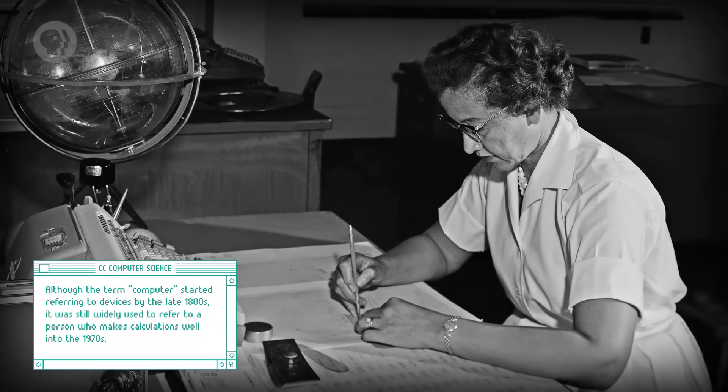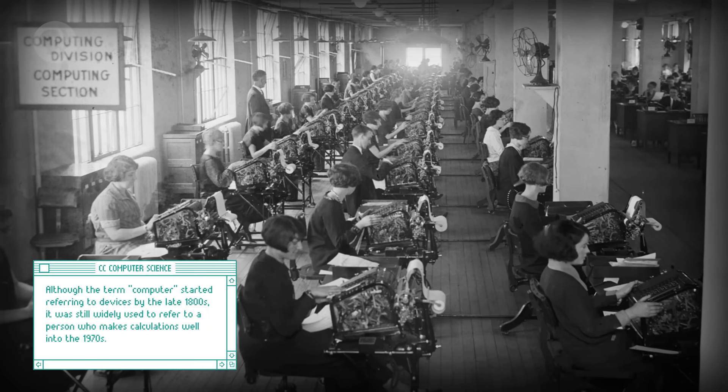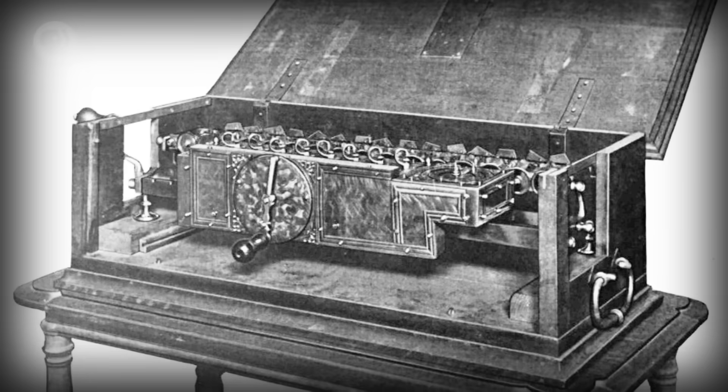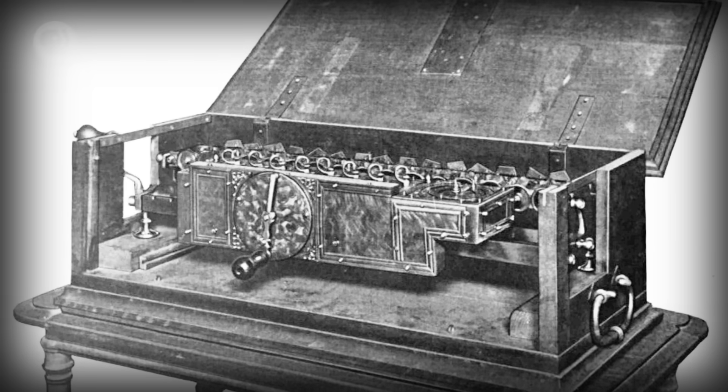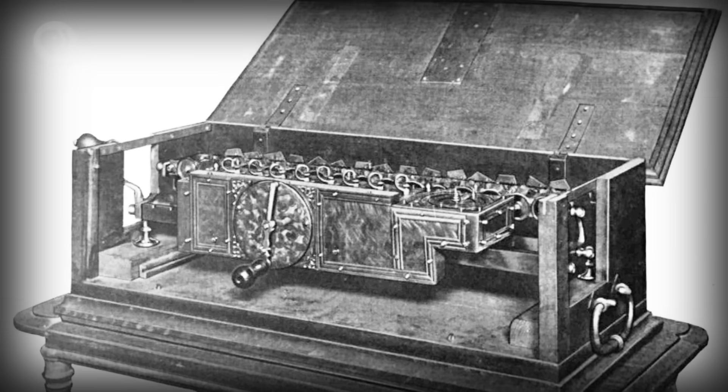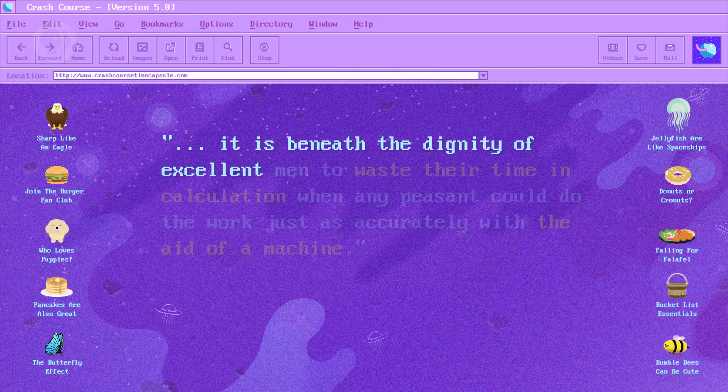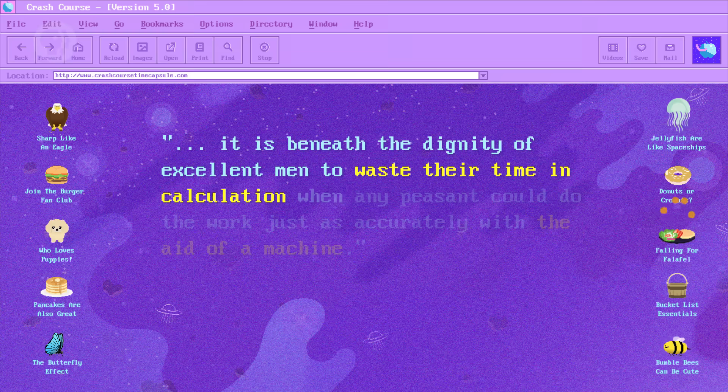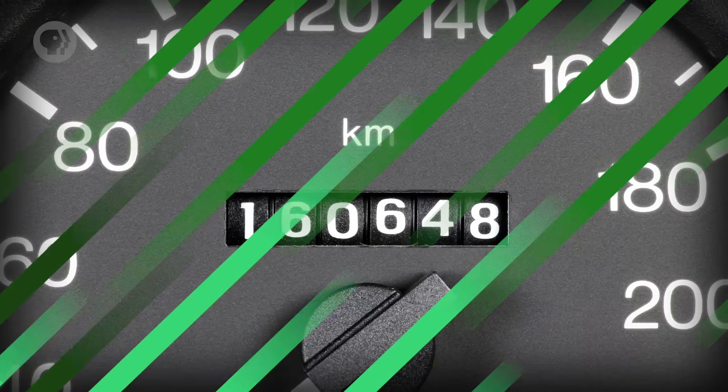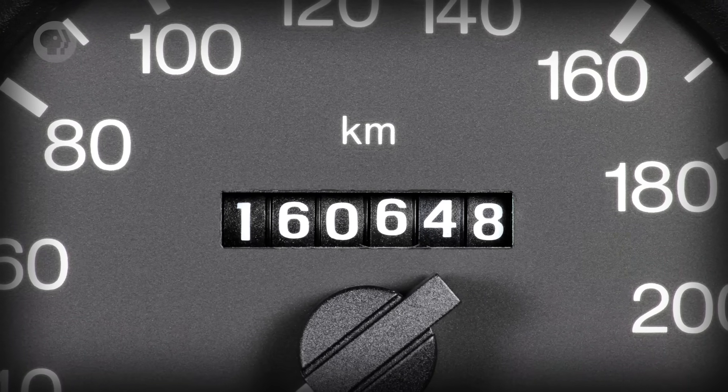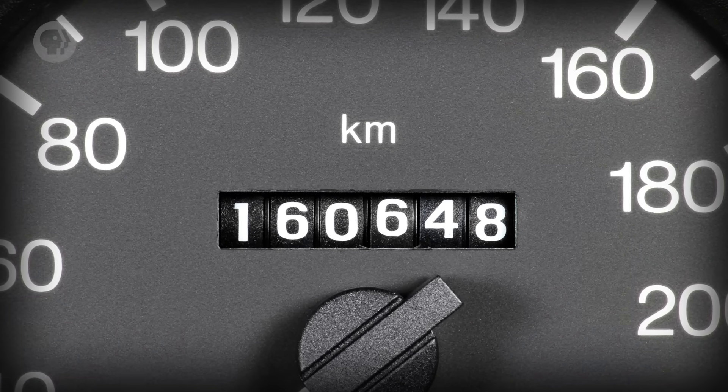This job title persisted until the late 1800s, when the meaning of computers started shifting to refer to devices. And notable among these devices was the step reckoner, built by German polymath Gottfried Leibniz in 1694. Leibniz said, it is beneath the dignity of excellent men to waste their time in calculation, when any peasant could do the work just as accurately, with the aid of a machine. It worked kind of like the odometer in your car, which is really just a machine for adding up the number of miles your car is driven.